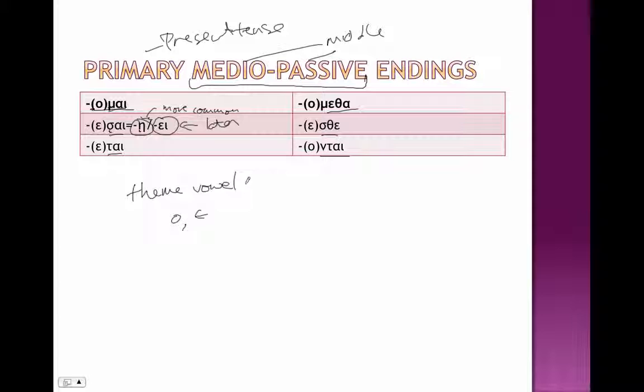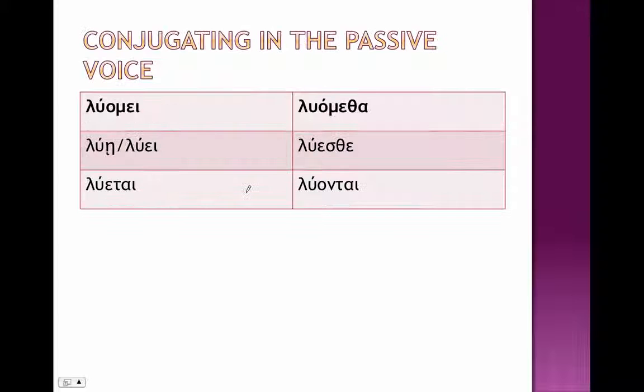And now to conjugate in the present passive, we're just going to add these right onto our present stems. So remember of L-U-O, the stem is lu without the omega, and so to conjugate luomai, luay, or luay, luetai, luomatha, luesthe, luontai.